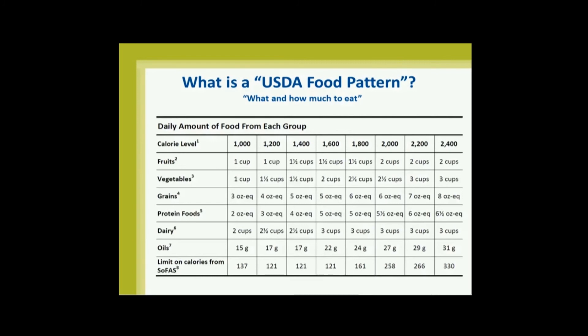What is a USDA food pattern? It's very simple. A USDA food pattern is essentially what and how much to eat. This is developed by USDA over the years and is currently in the dietary guidelines. We have five major food groups. We also have a category for oils — not a food group, but included as an allowance because a small amount of oils are needed. They're a major source of essential fatty acids.